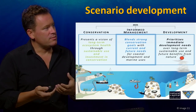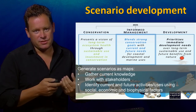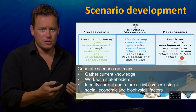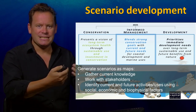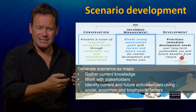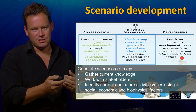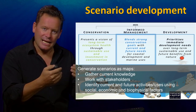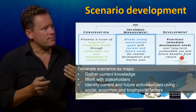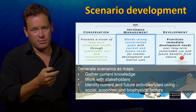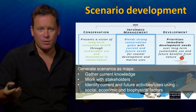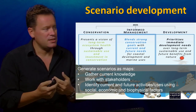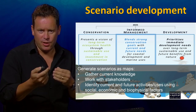One scenario might be a conservation scenario, where you work with stakeholders and key informants to envision how future activities in Belize — certainly on the coast — might develop under a conservation-oriented strategy, really prioritizing the good health of the ecosystem and allowing less development. Alternatively, you might focus on development and allow development to run rife — asking where developers might develop first if they could do whatever they wanted. You might also consider an intermediate solution, in this case termed 'informed management,' where you try to seek a compromise and want a bit of everything.